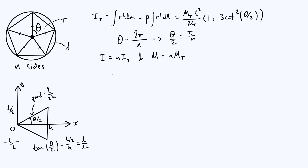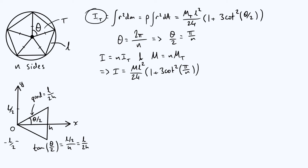Using those two facts, we arrive at our final answer: the moment of inertia of the polygon is M · L²/24 · (1 + 3cot²(π/n)). Notice there's no extra factor of n, because when you multiply both sides of the triangle equation by n, you replace m_T with M and I_T with I, so the n cancels out.